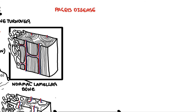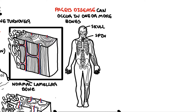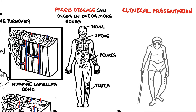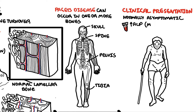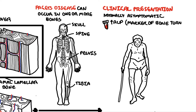Paget's disease can occur in more than one bone location. The sites most commonly involved are the skull, spine, pelvis, and lower extremities, such as the tibia. People with Paget's disease are normally asymptomatic. The majority are identified incidentally with a blood test showing elevation of ALP, which is a marker of bone turnover. Otherwise, patients may complain of pain, joint pain, osteoarthritis, increased risk of fractures, disabling bone deformities, and nerve compression from the enlarging bone causing a variety of symptoms.